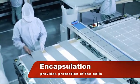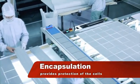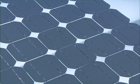The interconnected cells are placed in a sandwich structure comprising a front sheet of tempered low-iron glass, a layer of EVA, the solar cells, another layer of EVA, and a backsheet.